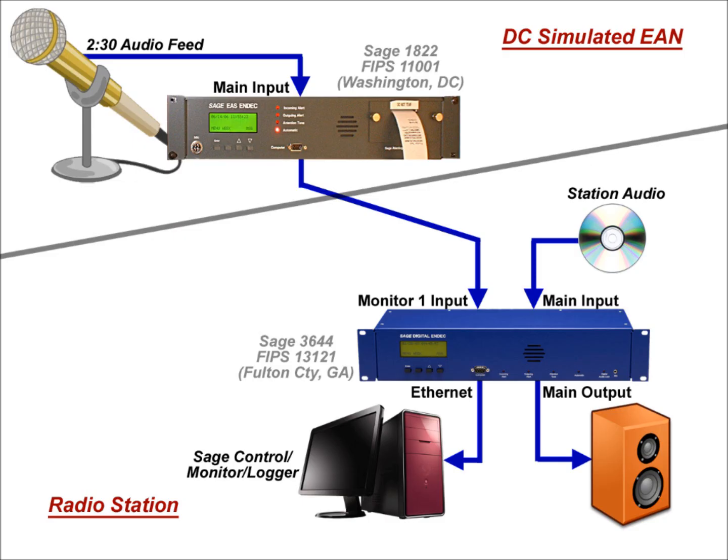This is a summary of the test environment. A SAGE Model 1822 was used to create the EAN. It was programmed with Washington DC as its local area, which is the FIPS code that will be used for the November 9th national test. The current SAGE Model 3644 Digital Index was used as the radio station unit. This unit was about to be installed at radio station WQXI in Atlanta and was programmed with the appropriate default settings for the station and the Fulton County, Georgia local area.